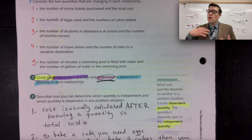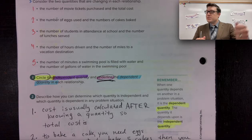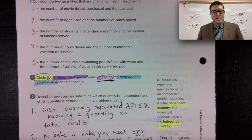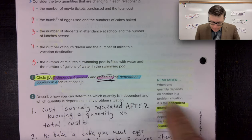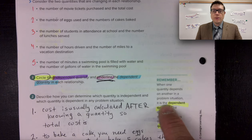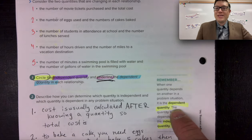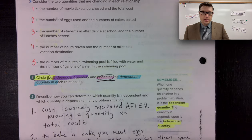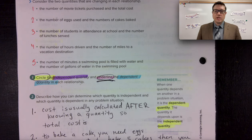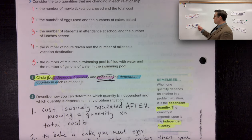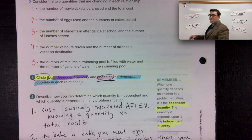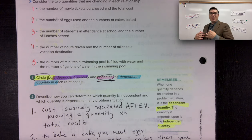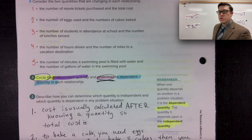Pause the video, skip forward or back depending on what you need. Remember: one quantity depending on another in a problem situation is the dependent quantity, and the quantity it depends on is called the independent. Like my word wall says — to be independent means you can support yourself; things depend on you, you do not depend on others. In mathematics we describe that relationship the same way.